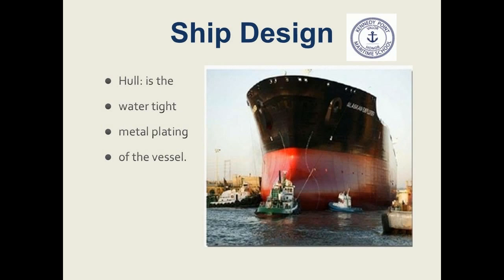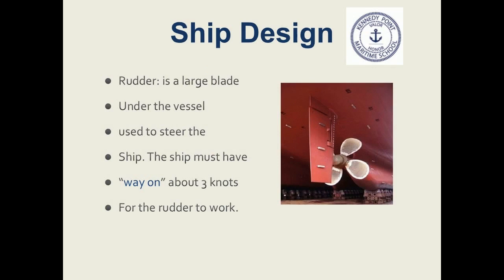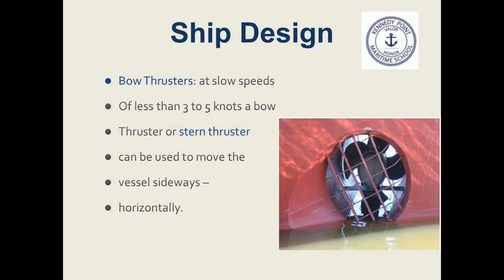We will now define common parts of a ship. The hull is the watertight steel outer plating of the vessel, made of sheets of steel. The long side of the sheet is called the seam and the end of the plate is called the butt. These metal sheets are similar to four-foot by eight-foot sheets of plywood used in building construction. Smaller boats can be made of aluminum, fiberglass reinforced plastic, or wood. The rudder is used to steer the ship's direction — a blade large enough to control the ship, located under the vessel. The ship must have way on at about three knots for the rudder to work. A bow thruster or stern thruster moves the bow of the vessel sideways laterally at slow speeds of less than three to five knots.